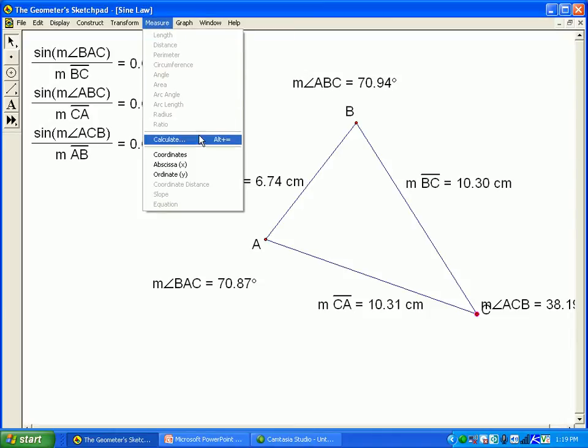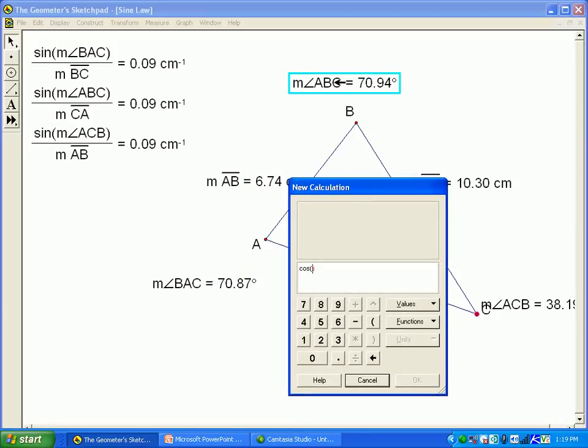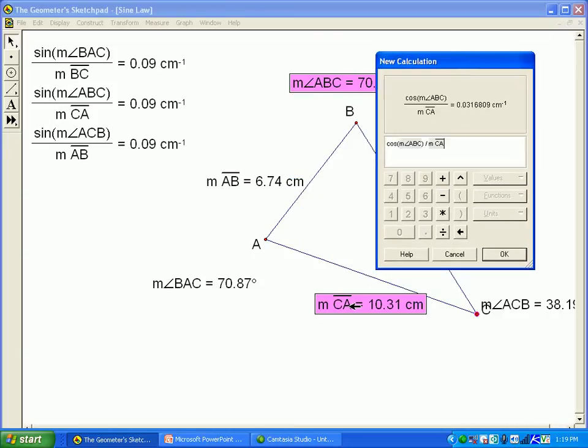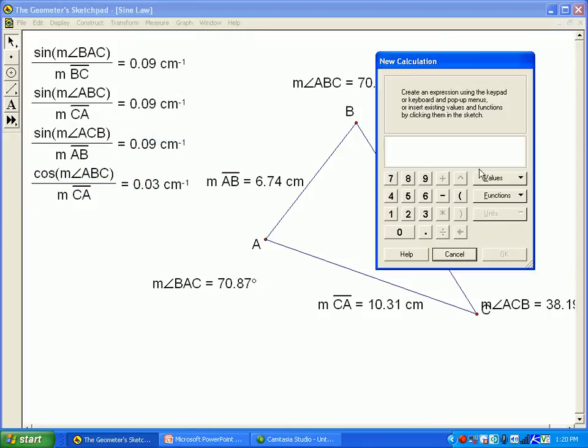Now, this doesn't work for the cosine ratio. For example, if I take the cosine of angle ABC and divide that by its opposite side, which would be the CA side, I get this. If I do that for another angle-side pair, the cosine of this side divided by the side opposite, which would be BC...